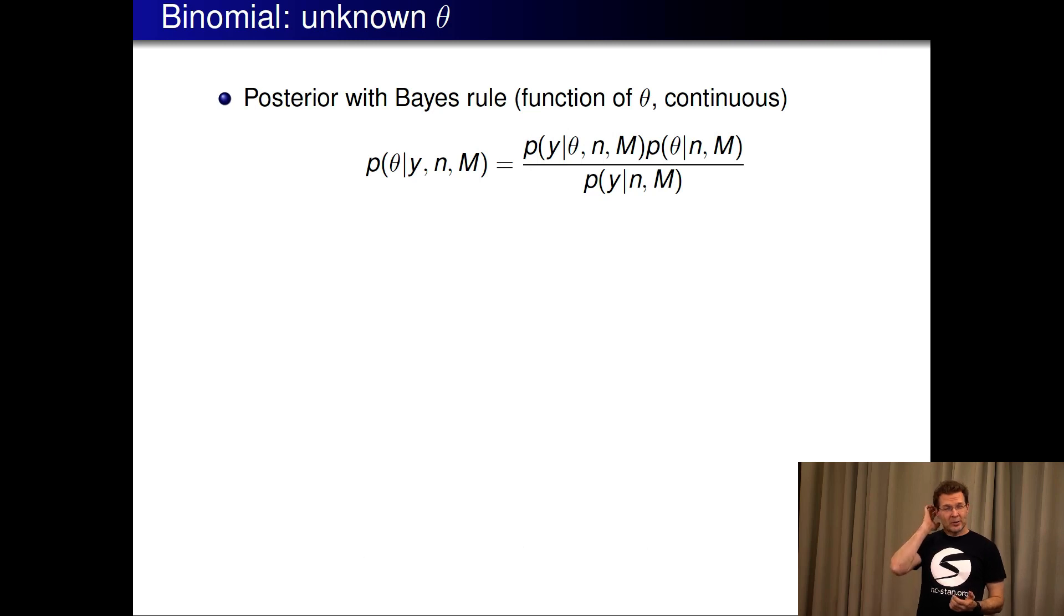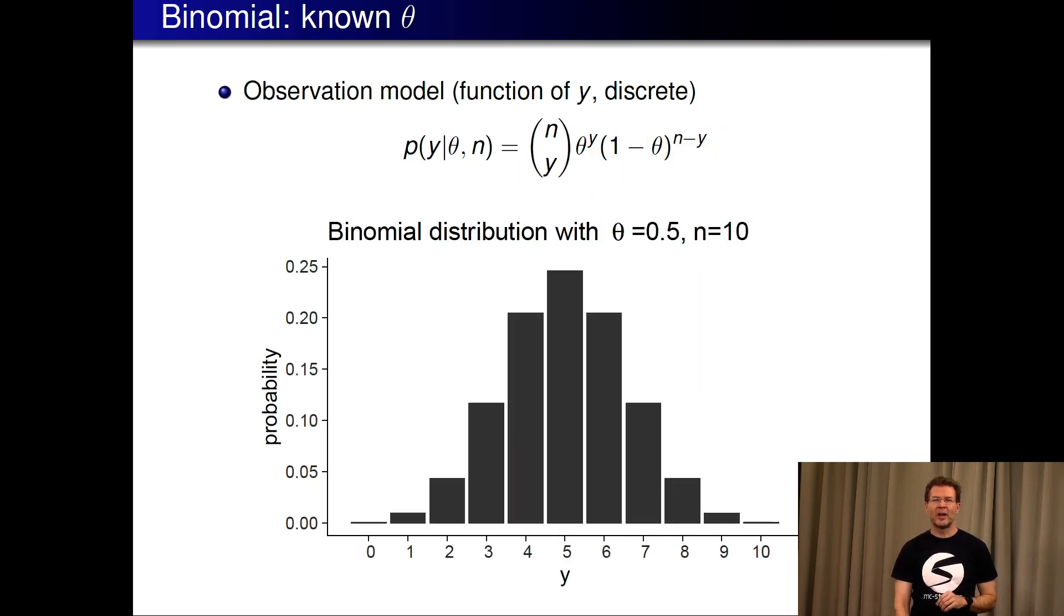We can now use Bayes rule to find out the other way around: what if we know the number of observations? Let's get back in this. Think about that here the theta was half and we would now observe eight red chips.